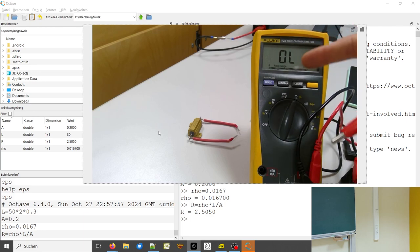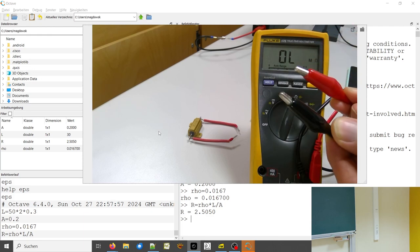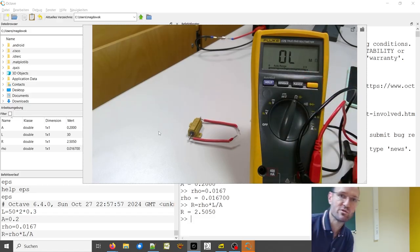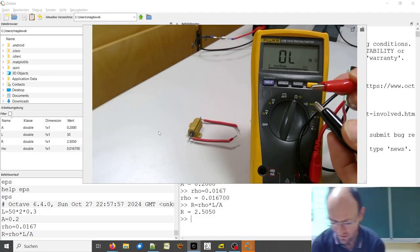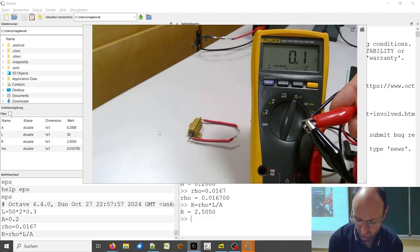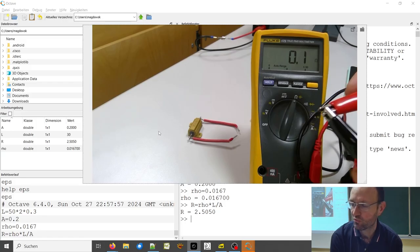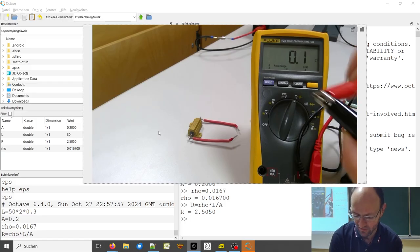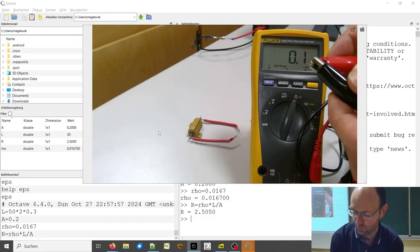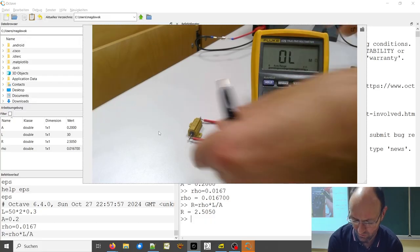And it will show OL, which stands for overload. So now the resistance between the two terminals is too large to be measured. And if I connect them to each other, then it shows something like 0.1 ohm. 0.1 ohm is now the resistance of the measurement wires and the connection here. So it will not measure zero, it will measure something small.